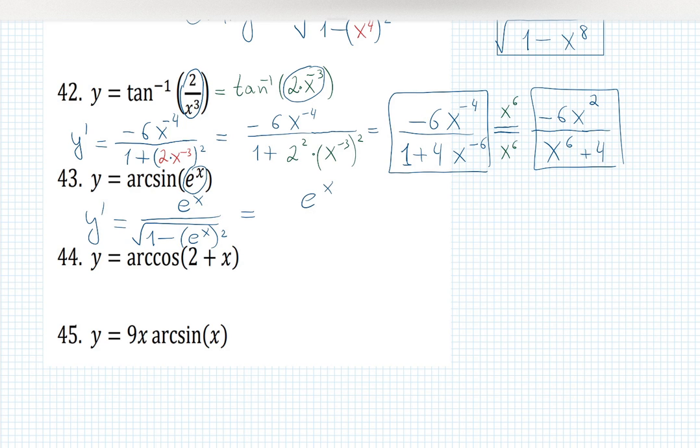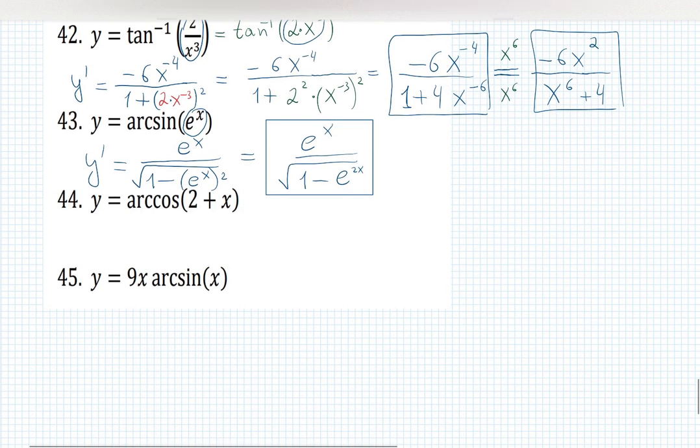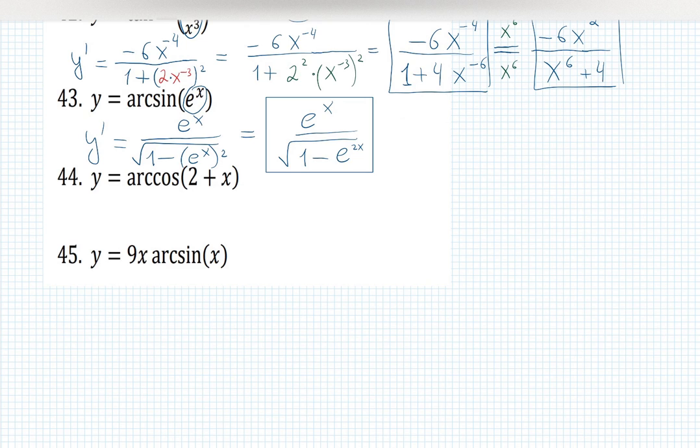There's basically nothing to simplify except that at the denominator, I can have 1 minus e²ˣ because eˣ squared is e²ˣ. Keep going. Two more examples left.